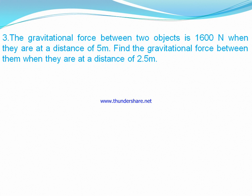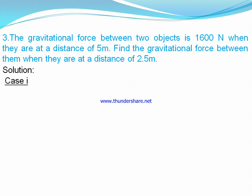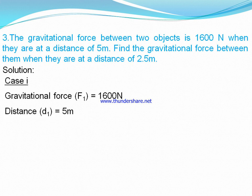The third worked example: the gravitational force between two objects is a given value when they are at a distance of 5 meters. Find the gravitational force when they are at a distance of 2.5 meters. Since two distances and two gravitational forces are discussed, this question involves two cases. In Case 1, gravitational force F1 = 1600 N and distance d1 = 5 m.